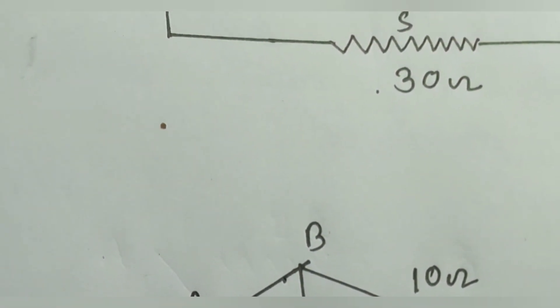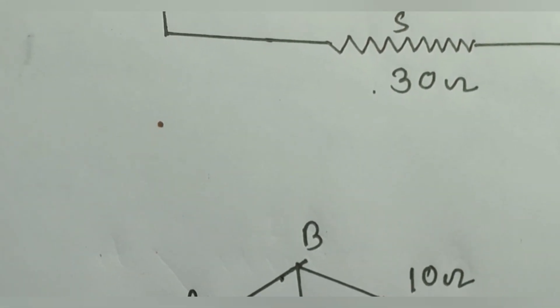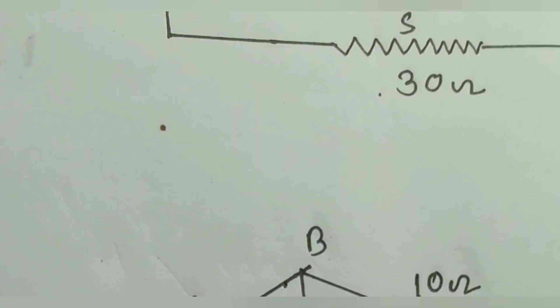Here you see that 30 by 10 and 90 by 30 are equal. Therefore we can omit this 10 Ohm resistance.